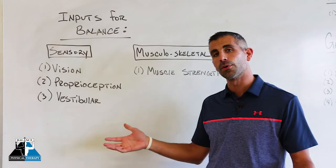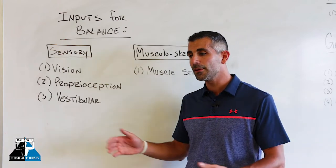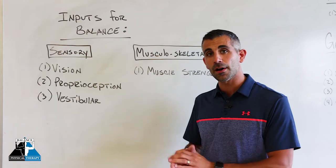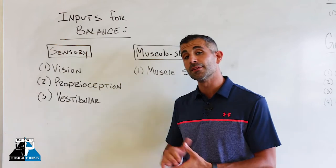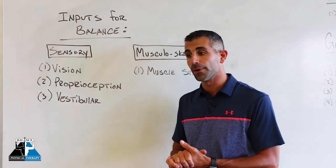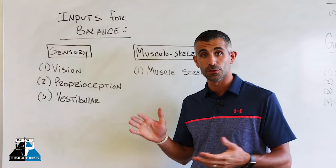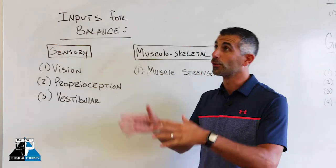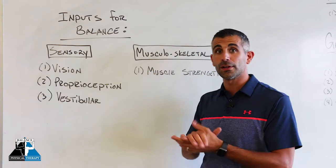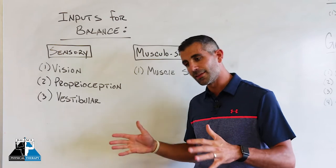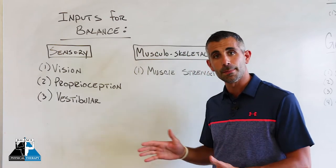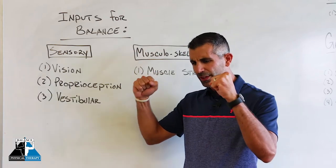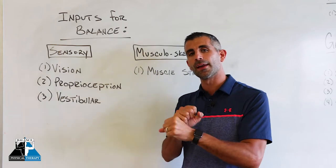Those balance discrepancies can show up with movement, particularly when vision or proprioception is also involved — like walking outside in a poorly lit environment, walking on grass or sand, or when your head is moving through space, such as walking and talking with a friend or looking up at scenery while hiking.